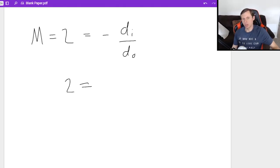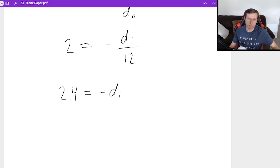So it is negative DI over DO. So two equals negative, I don't know what DI is. But I do know that DO is 12 positive 12, because that's what we said DO was. So then we just multiply both sides by 12. 24 equals negative DI. And then you just multiply the negative over the answer is negative 24 centimeters.